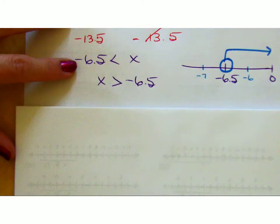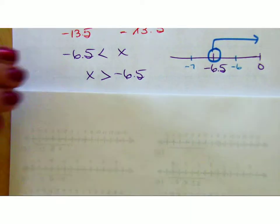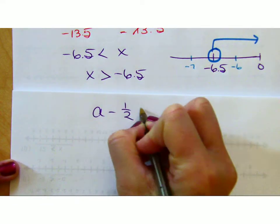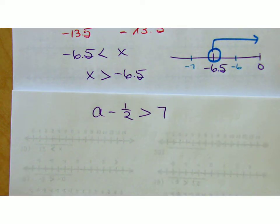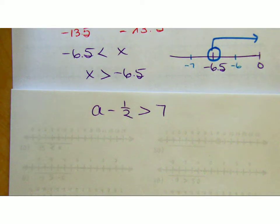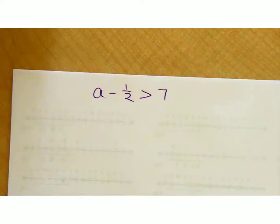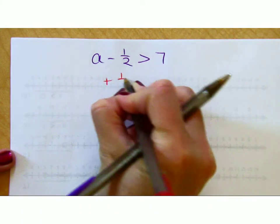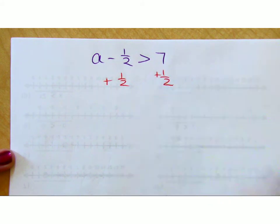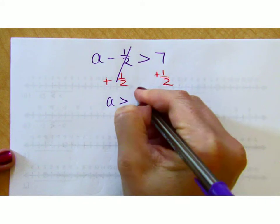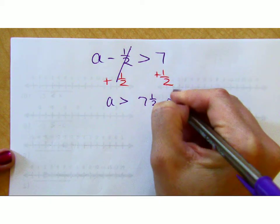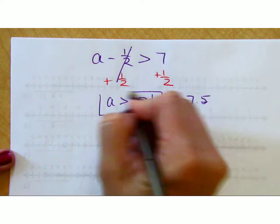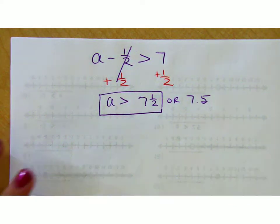Let's take a look at what a subtraction equation would look like. That would be me taking a and subtracting a half and having it be greater than 7. So then obviously, I would just use the addition property of equality to cancel that out. A is going to be greater than or equal to 7 and a half. You could make it a decimal if you'd like. And then this is what I'm looking to graph.